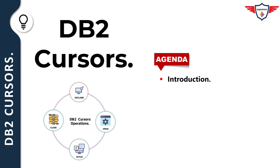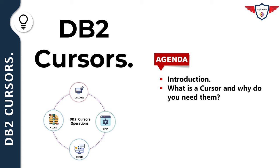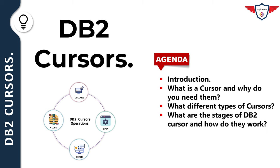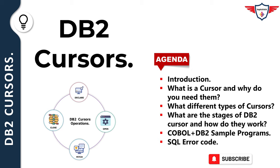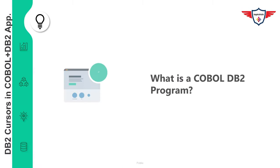We start today's session with an introduction to COBOL DB2 application. After that, we will talk about what a cursor is and why you need them. Then we'll cover the different types of cursors in DB2, the different stages of DB2 cursors, and how they work in your COBOL DB2 program — the entire lifecycle of a cursor. Finally, I'll discuss a couple of SQL codes you should always consider when writing your COBOL DB2 program.